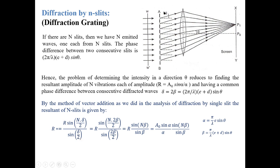Here R is the amplitude of the light ray emitted from each single slit, N is the total number of slits in the grating illuminated by the incident wavefront, and δ is the phase difference between two consecutive diffracted light rays. Writing δ = 2β, so δ/2 = β, the resultant amplitude reduces to R* = R sin(Nβ) / sin(β), where R = A₀ sinα / α and A₀ is the amplitude incident on any single slit. This is the final expression for resultant amplitude at the screen due to a grating.